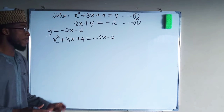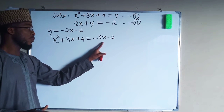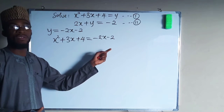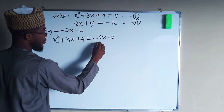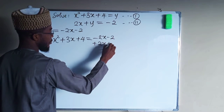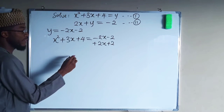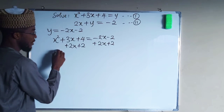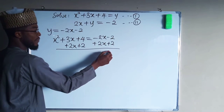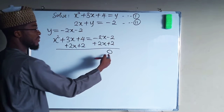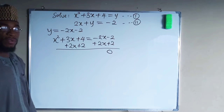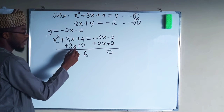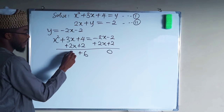We need to add 2x plus 2 to both sides in order to make the right side equal zero. Adding 2x plus 2: negative 2x plus 2x gives zero, 4 plus 2 gives 6, and 3x plus 2x gives 5x. So we get x squared plus 5x plus 6 equals zero.